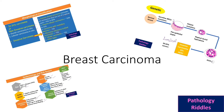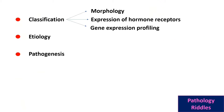Welcome to Pathology Riddles. Today we will be discussing breast carcinoma, mainly for MBBS students. We will discuss the classification — there are three types: one based on morphology of the tumors, one based on whether tumors express hormone receptors, and third based on gene expression profiling, where we check mRNA levels. We will also cover etiology, pathogenesis, morphology, metastasis, and prognosis.